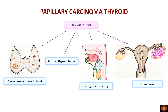Another site is the thyroglossal duct cyst. During embryological development, a protrusion from the foramen cecum in the posterior part of the tongue grows caudally and forms the thyroid gland. Later, this duct becomes a fibrous vestigial cord, but in some individuals remnants persist and accumulate secretions forming a thyroglossal duct cyst. Thyroid tissue in this cyst can also give rise to papillary carcinoma.